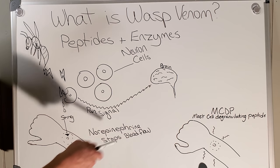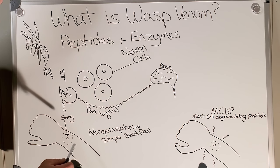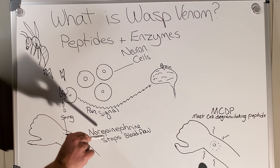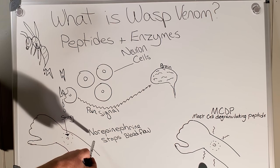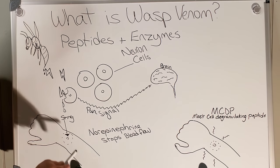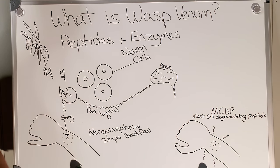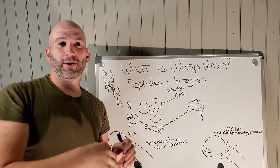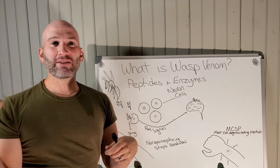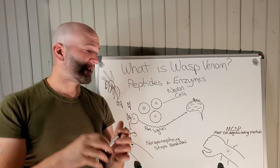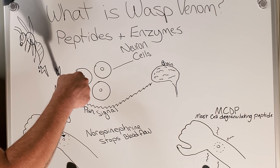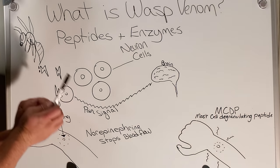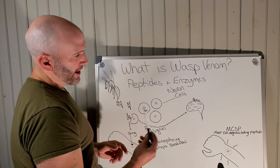As things progress, after the pain signal goes to the brain — that's the initial response — the sting itself has not only peptides and enzymes but also norepinephrine. That stops blood flow to the site, not so much to keep things from coming in as to keep the venom from leaving the site, so it stays concentrated in that one spot and continues to break down cells and cause pain.